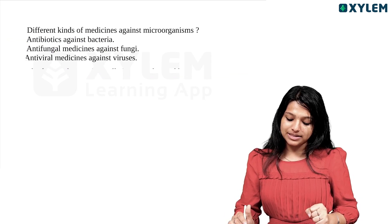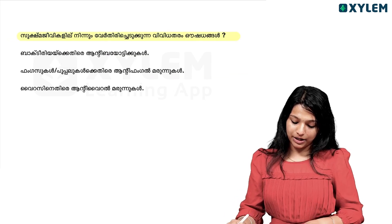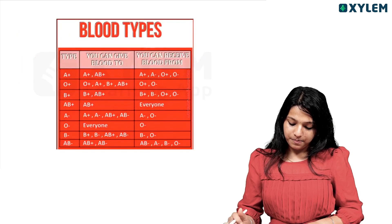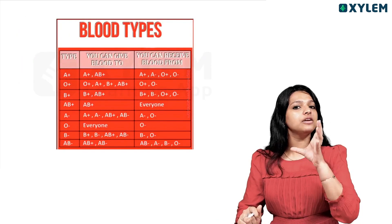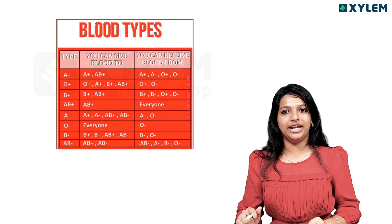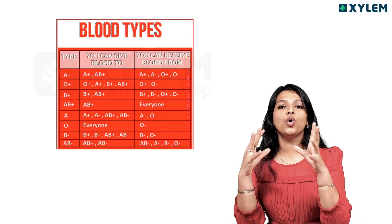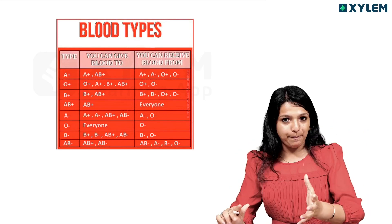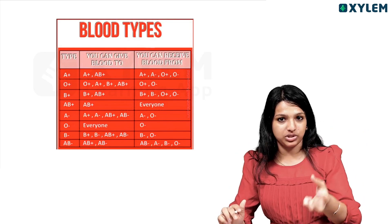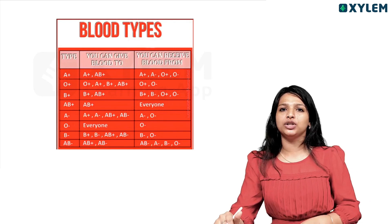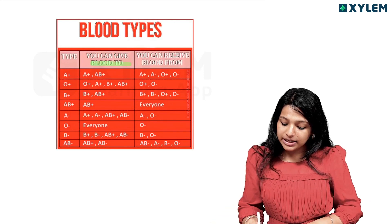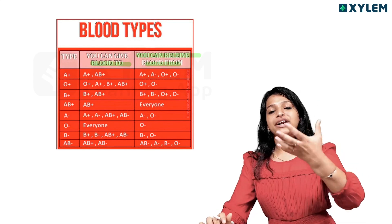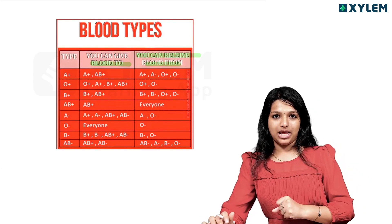Different kinds of medicine work against microbacteria. Now let's talk about blood types. We have different blood groups: A, B, AB, and O. You can give blood and you can receive blood from compatible groups.